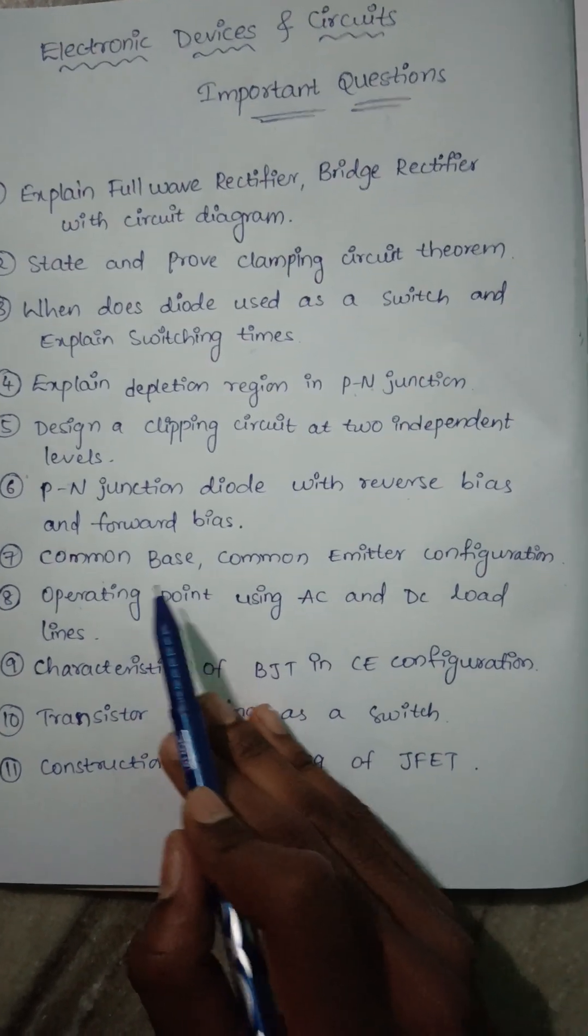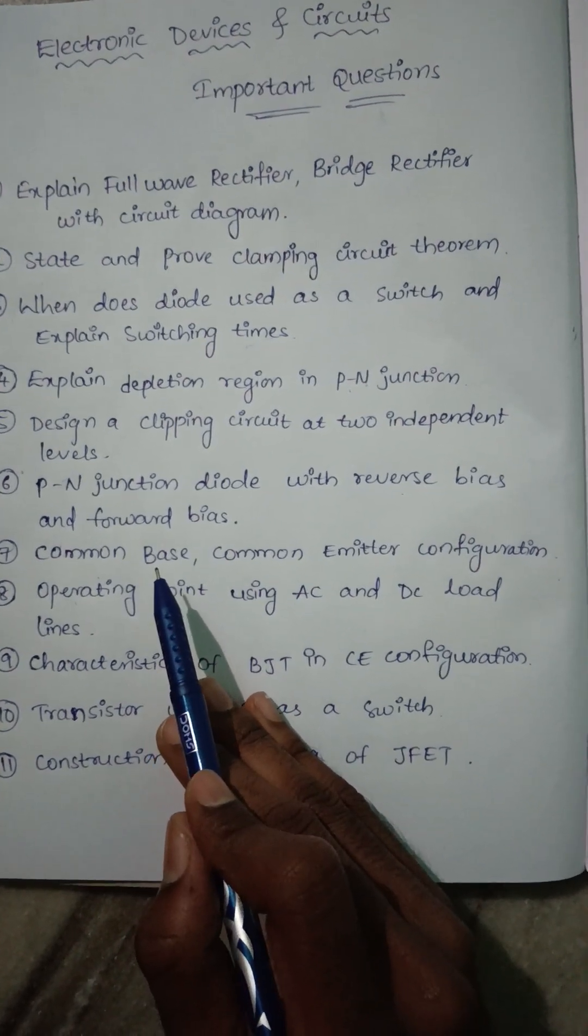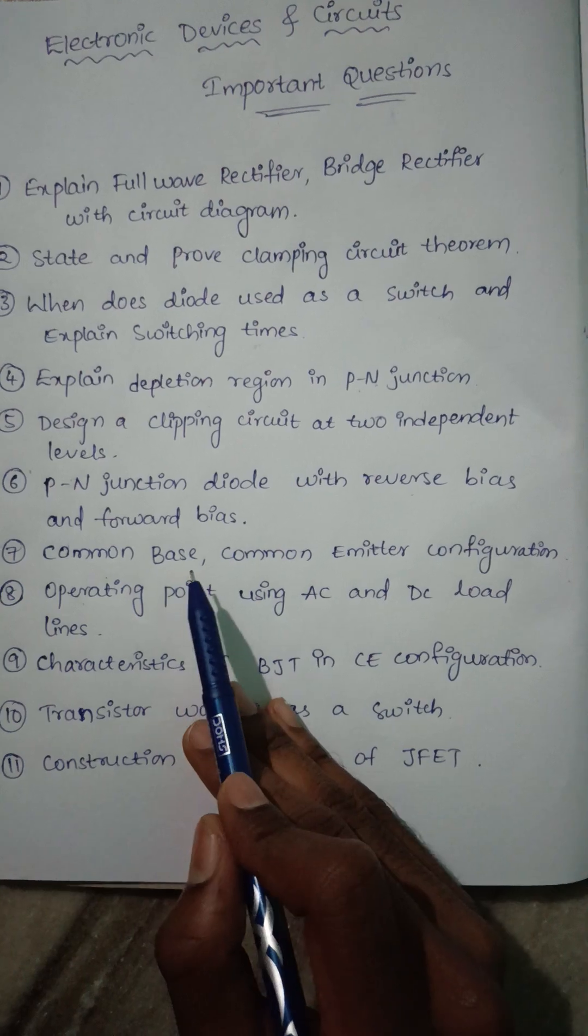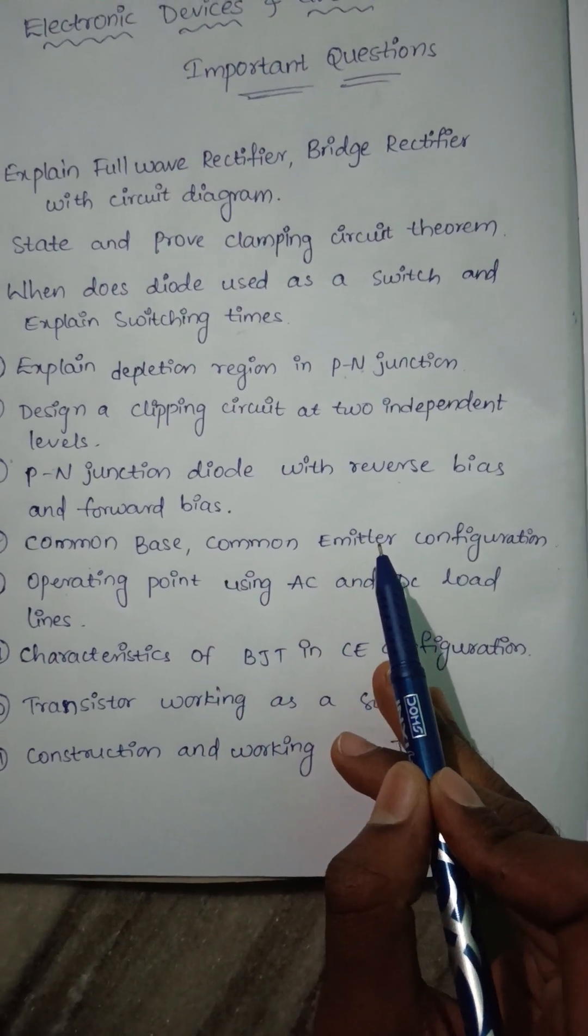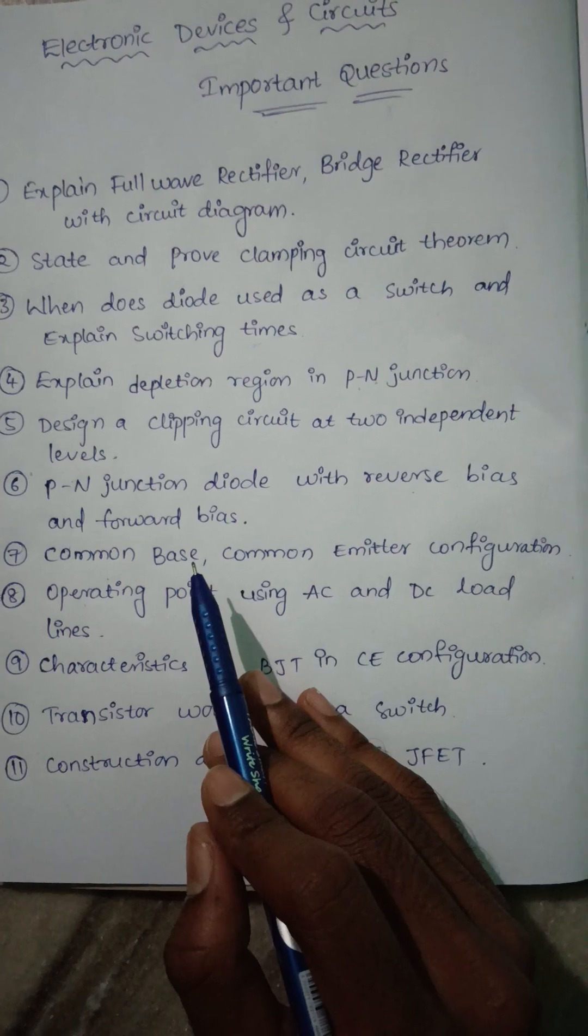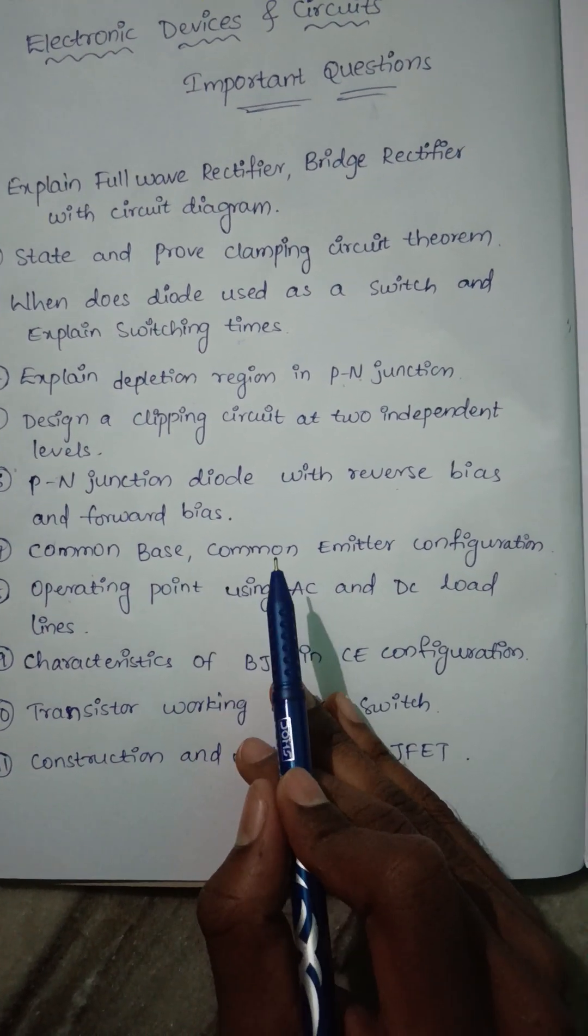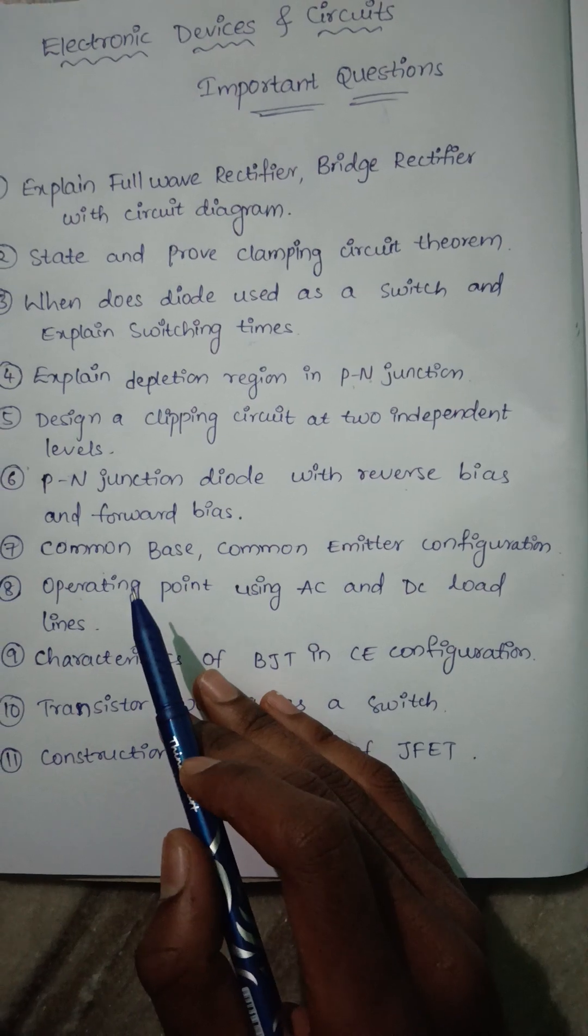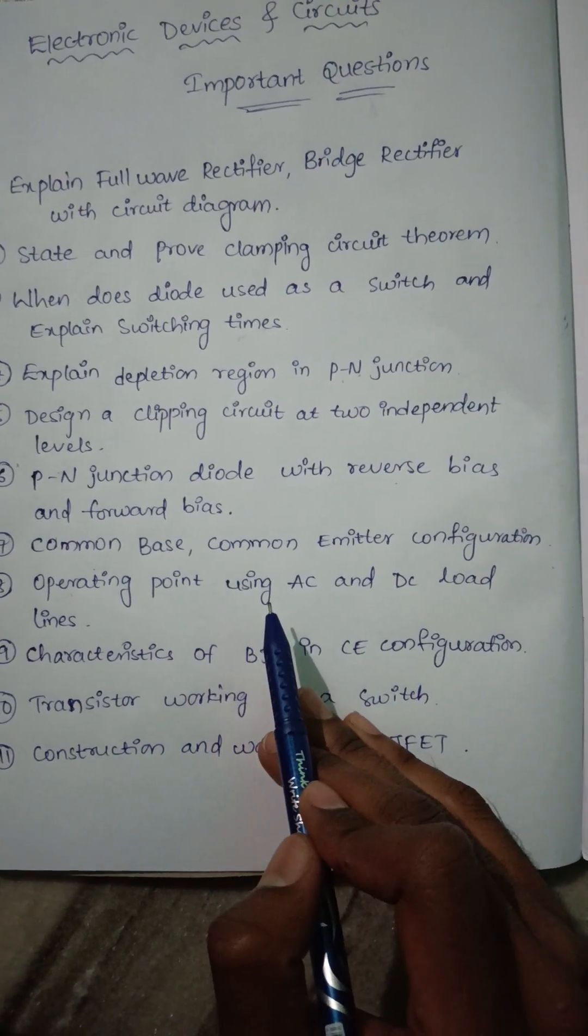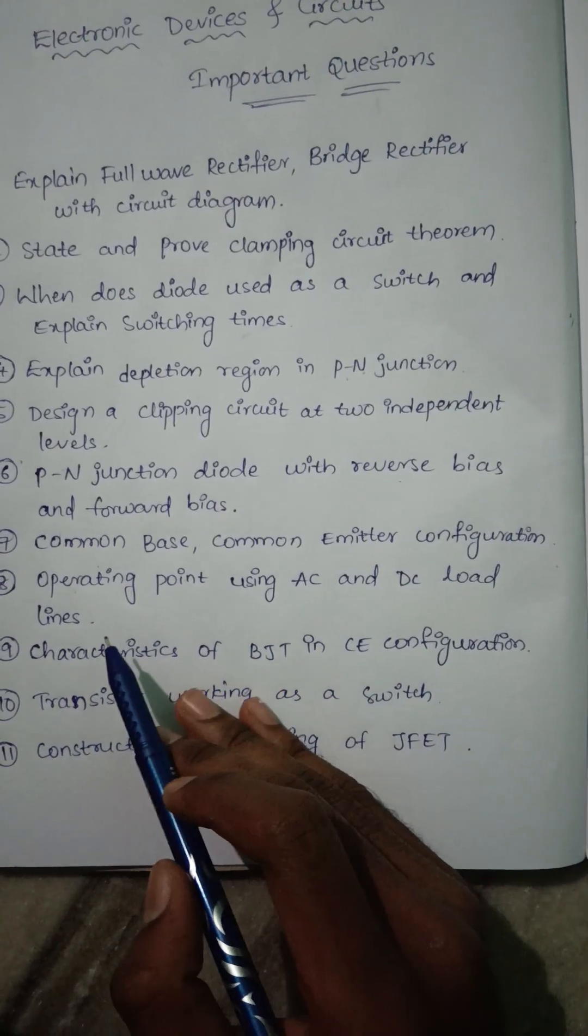Now mainly in second unit, this is a very important question: common base and common emitter configuration. Common collector may also be asked. Next question is operating point using AC and DC load lines.